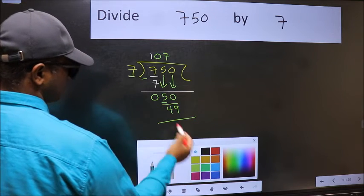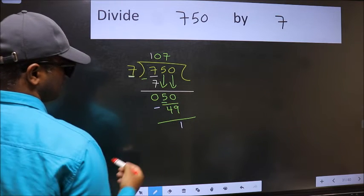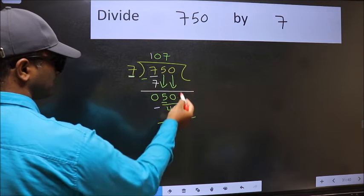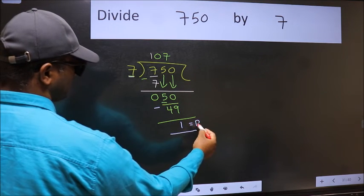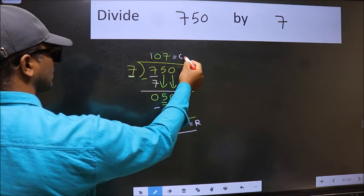Now we subtract and get one. There are no more numbers to bring down, so we stop here. This is our remainder, and this is our quotient.